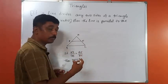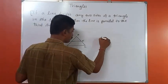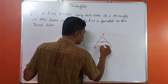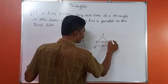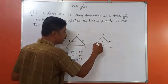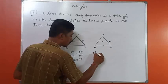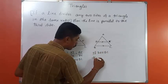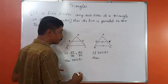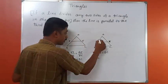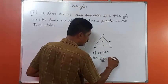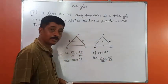Now, what does BPT say? In triangle ABC, if line DE is drawn parallel to BC, then by BPT, this parallel line divides the two sides AB and AC in the same ratio — that is, AD/DB = AE/EC.